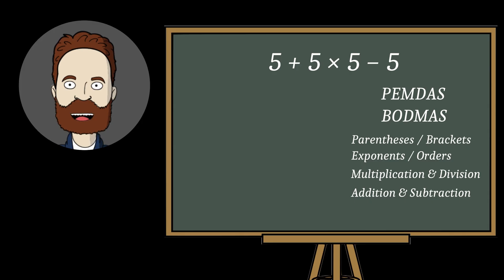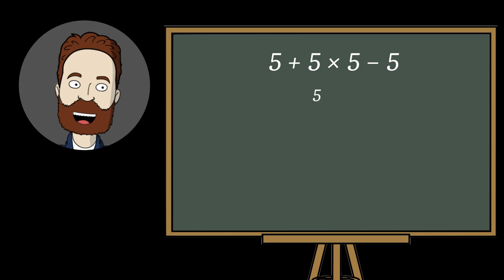Therefore, we first perform the multiplication. 5 times 5 equals 25. Now the expression looks like this.